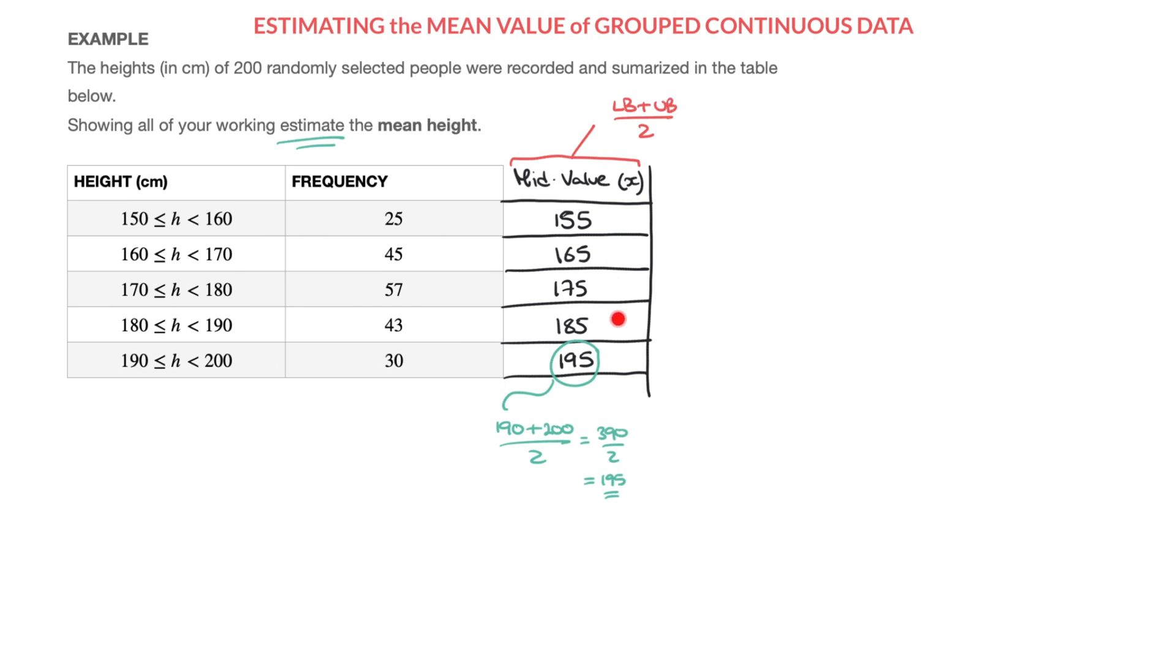Now that we've found all the mid-values, we're going to add one more column to our table. And so I'll quickly construct that here. And for each row in this column, we'll calculate f times x. And don't worry, I'll explain that in just a second. Let me just quickly complete the cells of this table.